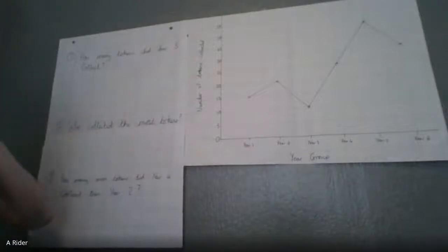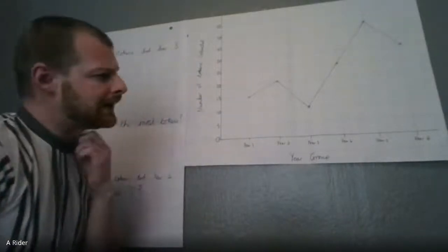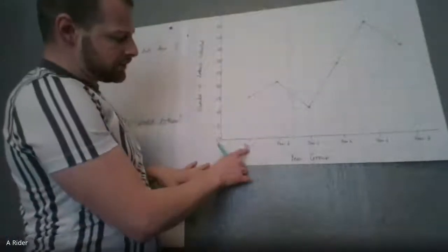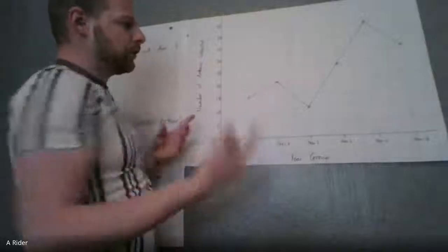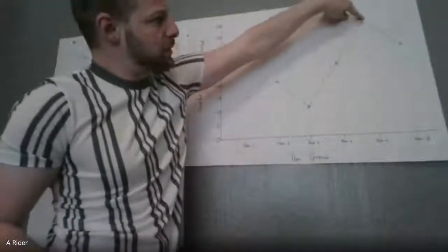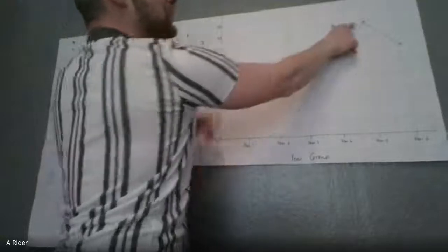Now I need to know who collected the most tokens. There's two ways I could do this. I could go across each year group, look at year one, year two, or I can see where the highest point of my graph is, which is here. I can see that that is the highest point of my graph, which is 50 tokens.